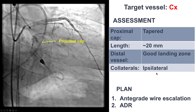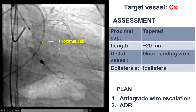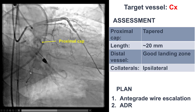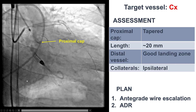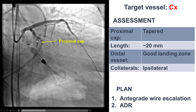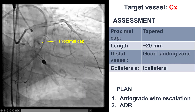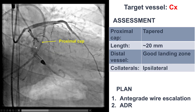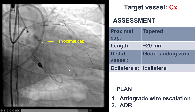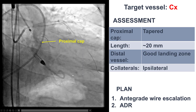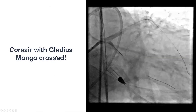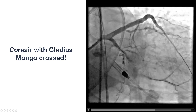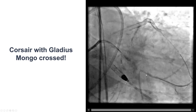We then decided to treat the circumflex. Even though there was no viability in this territory, it was supplying good collaterals to the right coronary artery territory, and it was much more straightforward to treat than the RCA. It had a tapered proximal cap, occlusion length of about 20 millimeters, and a good distal landing zone. We were able to advance a Gladius Mongo from proximal through the distal true lumen.